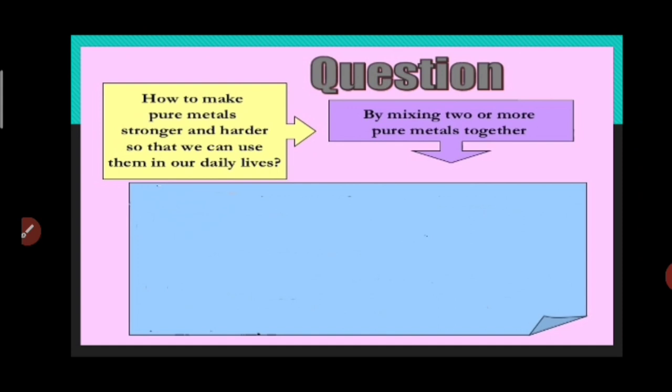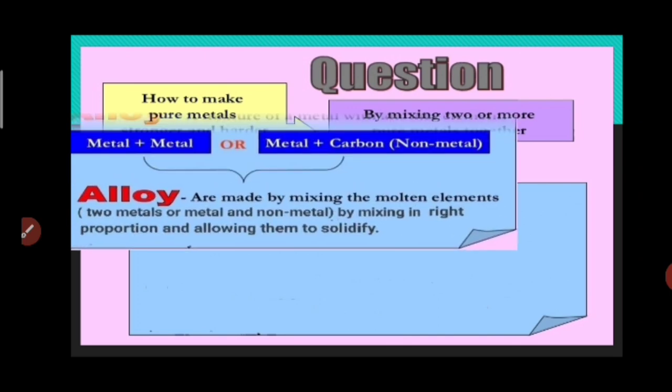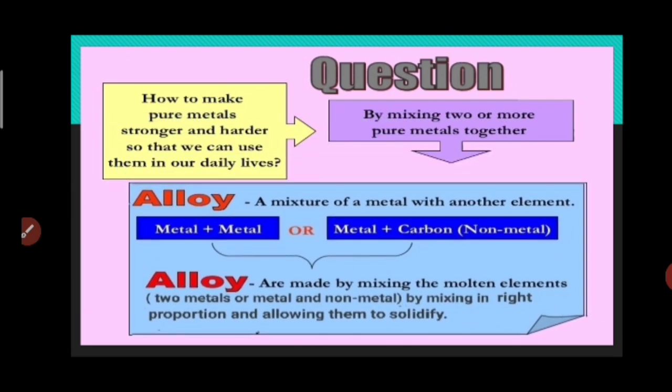Yes, we can do it by mixing two or more pure metals together, and it is known as an alloy. It is a mixture of metal with another element, and that element can be a metal or a non-metal. Alloy is made by mixing the molten elements, that is two metals or a metal and non-metal, by mixing them in the right proportion and allowing them to solidify.